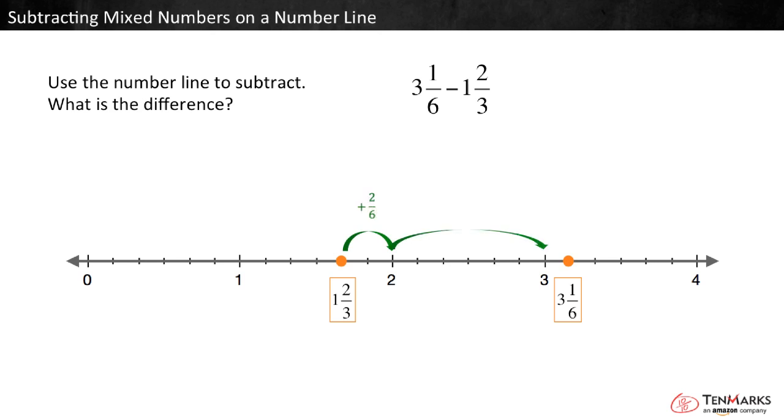Count up another hole to 3. We hopped 1, or 6 sixths. Count up to 3 and 1 sixths. We hopped one more sixth.